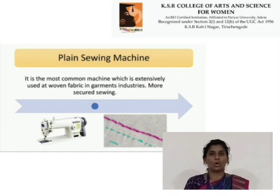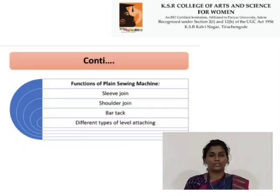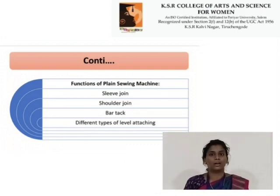The client sewing machine is the most common machine which is extensively used on woven fabric in the garment industry. It provides more secure sewing. Functions of the client sewing machine include sleeve joint, shoulder joint, and different types of leather attaching.